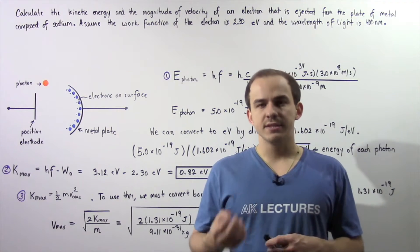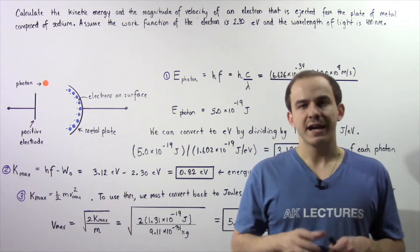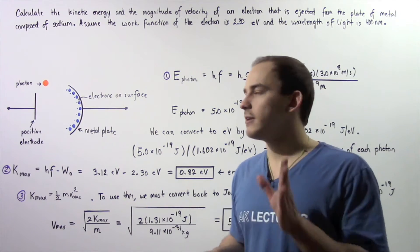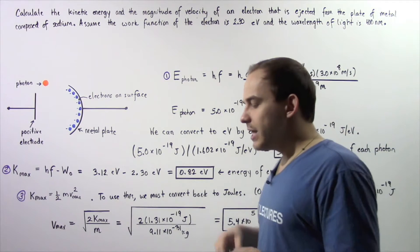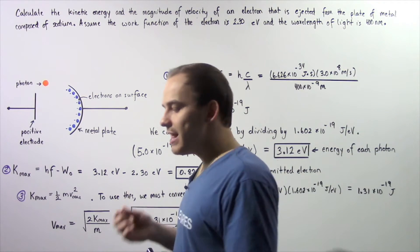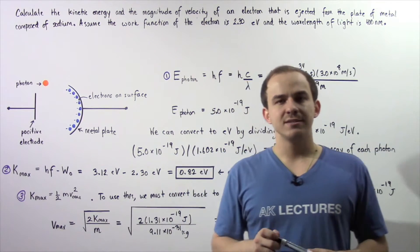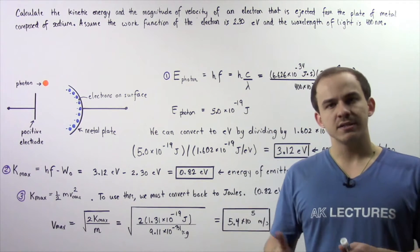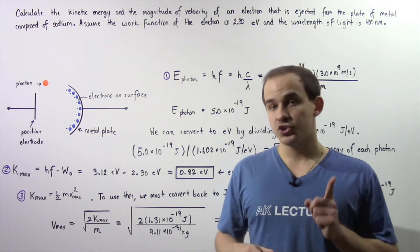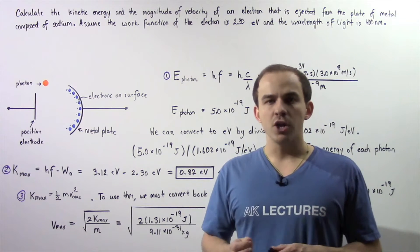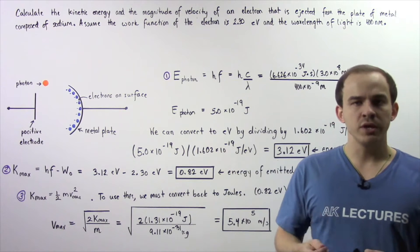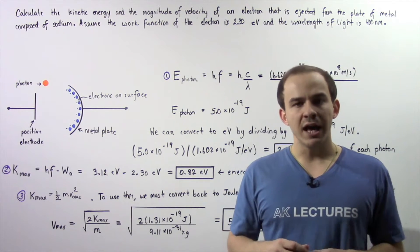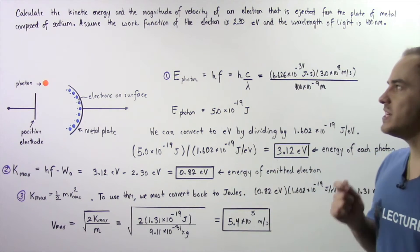In the previous lecture, we discussed the photoelectric effect. Now let's look at the following application of that effect. We'll calculate the kinetic energy and the magnitude of velocity of an electron that is ejected from a metal plate consisting of sodium atoms. We're assuming that the work function of the electron is 2.3 electron volts and the wavelength of the beam of light is 400 nanometers.